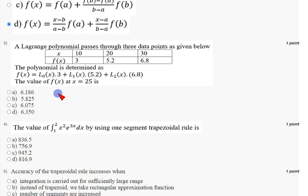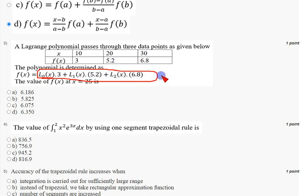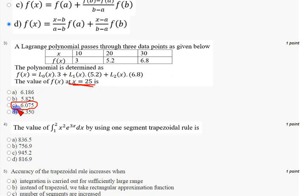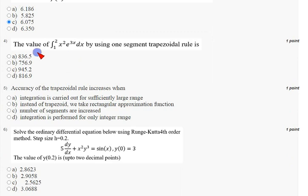Coming to the third question — they have given a Lagrange's table and a final equation: L0(x) * 3 + L1(x) * 5.2, which comes from the table. They are asking the value of f(x) at x = 25. I have worked this out and got the answer as 6.075, which is option C. Mark option C as the correct answer for the third question.